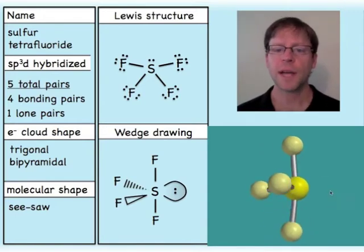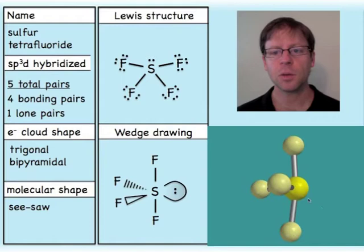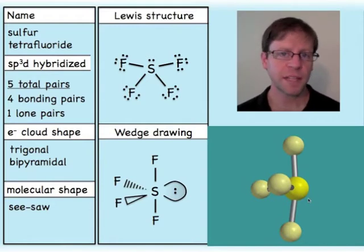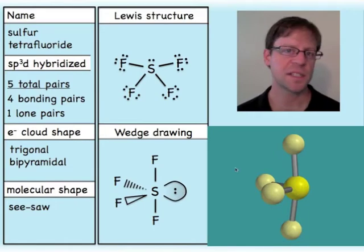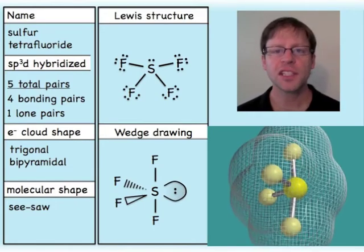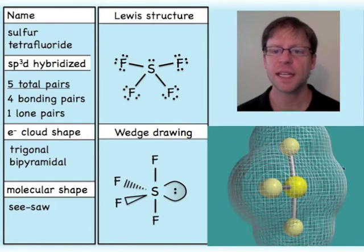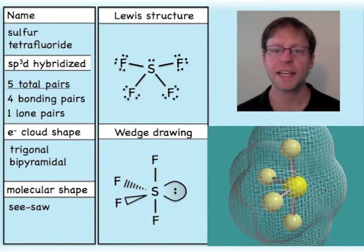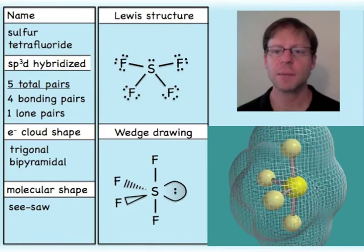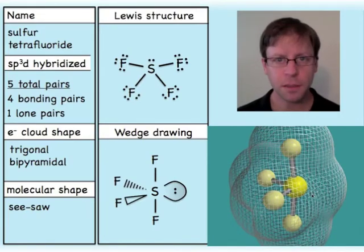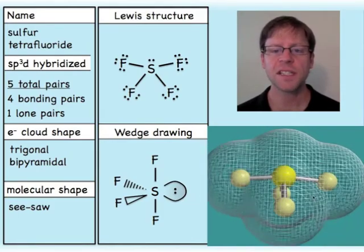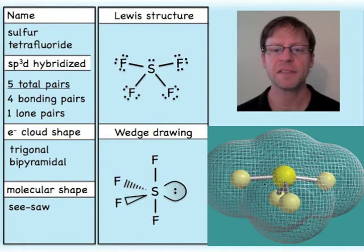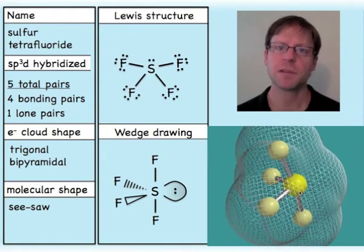To draw SF4, I line up three atoms and the lone pair in the plane of the paper, with a solid wedge coming out and a dashed wedge going in. When showing the full electron density, the lone pair is included and the electron cloud is trigonal bipyramidal. The overall shape for just the atoms is called seesaw — you can picture the base of a seesaw that could wobble back and forth.